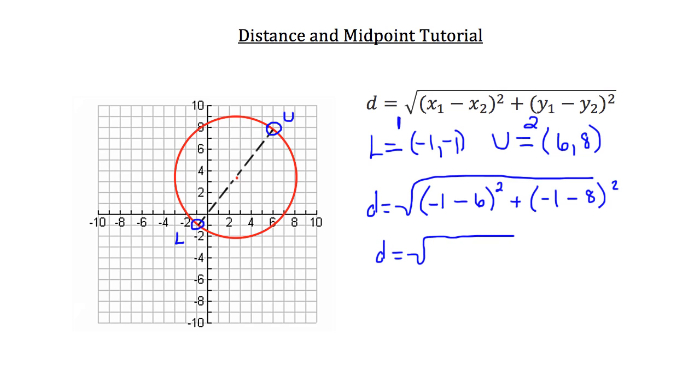So we'll simplify what's inside the parentheses. Negative 1 minus 6 is negative 7 squared, plus negative 1 minus 8, which is negative 9 squared. Go ahead and square both those parentheses. So negative 7 is 49, and negative 9 squared is 81.